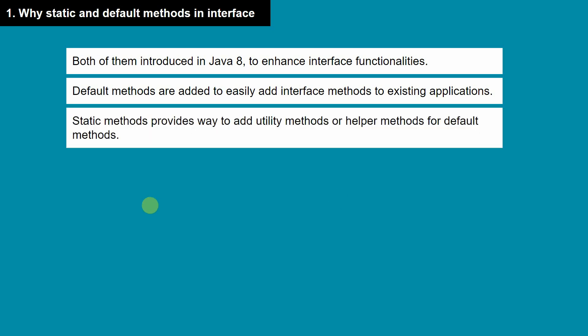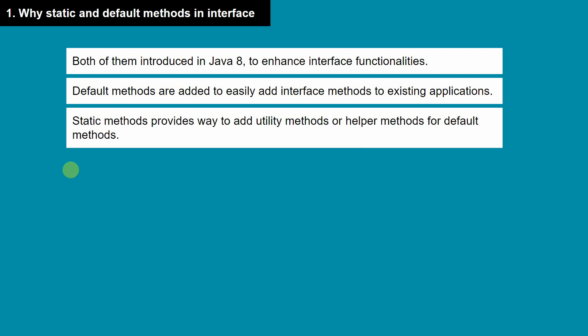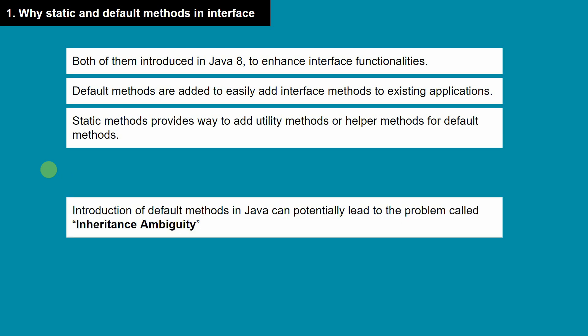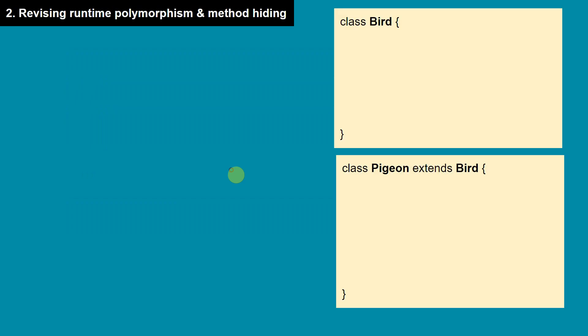This way, maintenance becomes easier and we can write code in interfaces without breaking existing code. For static methods, they provide a way to add utility methods and can also be used as helper methods for default methods. With the introduction of static and default methods, one problem arises called inheritance ambiguity, also known as the diamond problem.